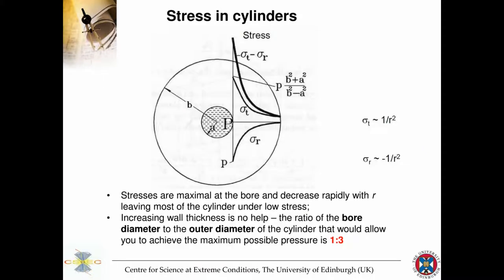Since we're on piston cylinder cells, I'll give a quick introduction to how they work and what's important in their design. This diagram shows stress distribution in a cylinder under high pressure — a cross-section looking along the axis. You see the cylinder and the pressure medium compressed inside. There are two types of stresses: tensile and radial. Both are very high at the surface of the bore, then decay quickly towards the edge of the cylinder. Stresses are maximum at the bore and decrease rapidly with radius, leaving most of the cylinder under low stress.